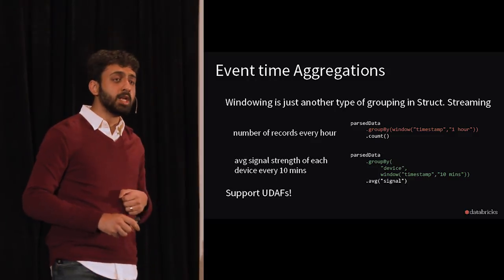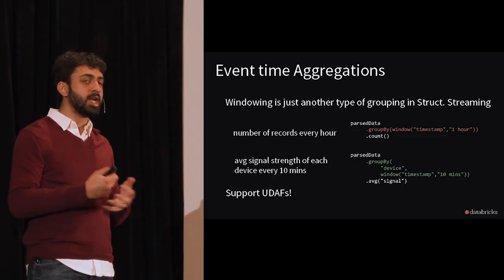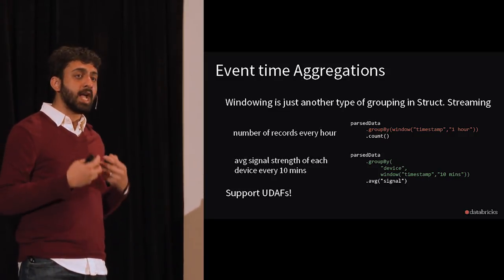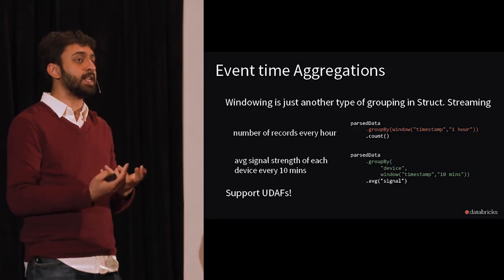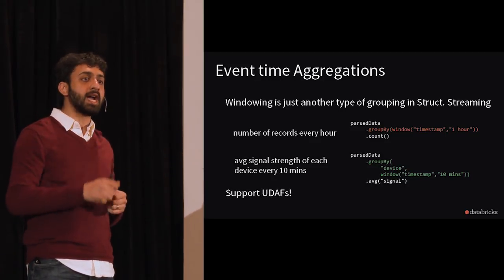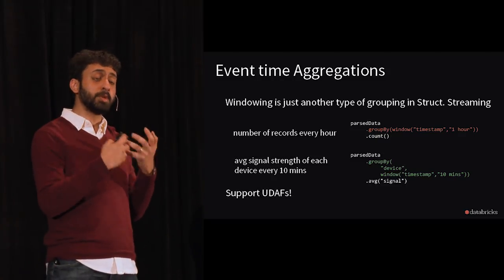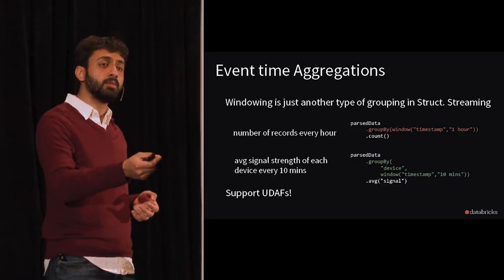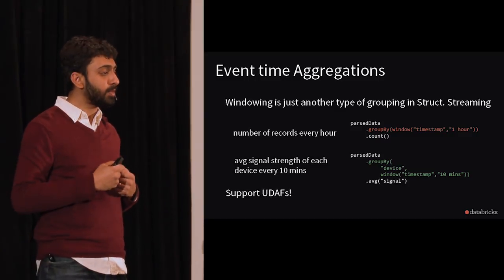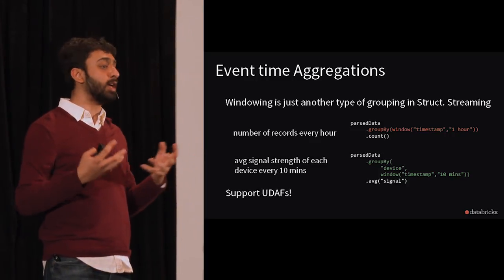Spark 2.3 has an experimental release of continuous mode working on non-aggregation, simple ETL-kind stuff — I highly encourage you to try it. The next step beyond simple ETL pipelines is event-time aggregations, typically windowing based on event time. In our API, windowing is just another form of grouping — you take every record and put it into multiple time window groups based on the event time of that record. You specify the timestamp column and the window length and how it moves.